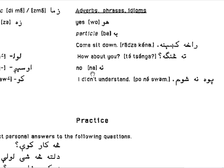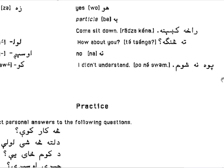'Na' means 'no,' similar to the English 'no' — again of Indo-European origin. 'Poh na shum' — I didn't understand. To make a statement negative, the word 'no' or 'na' is placed preceding the verb. 'Poh na shum' — I did not understand.